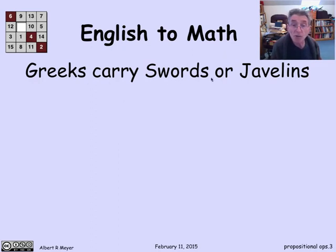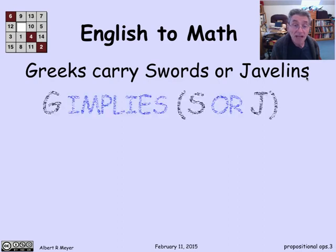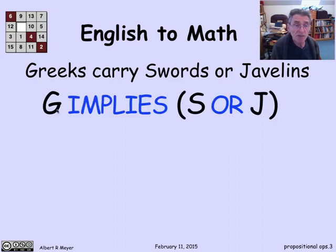Greeks carry swords or javelins. I could transcribe this into precise math notation as G for Greeks implies S for swords or J for javelins. This is an assertion that if you're Greek, then you carry a sword or a javelin. Really, I should say Greek soldiers, but let that be implicit.